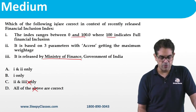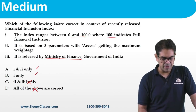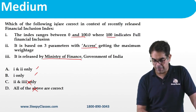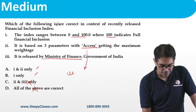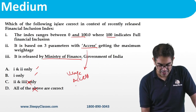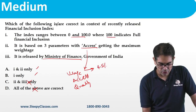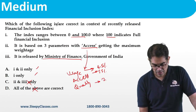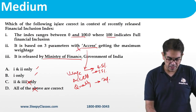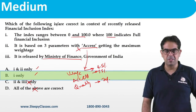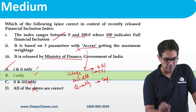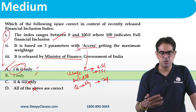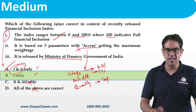Regarding the Financial Inclusion Index: it ranges from 0 to 100, where 100 means full inclusion — correct, so statement 1 is right. There are 3 parameters: usage (45% weightage), access (35% weightage), and quality (20% weightage). Statement 3 saying access has maximum weightage is wrong. Since only statement 1 is correct, the answer is option B (1 only). Be careful — don't confuse '1 only' with option A; check which option actually says '1 only'.